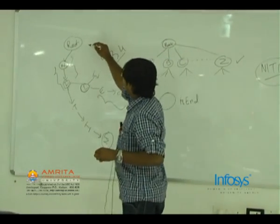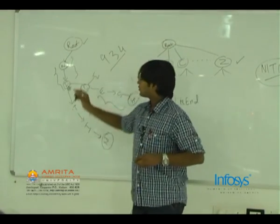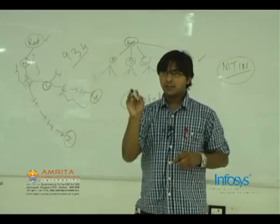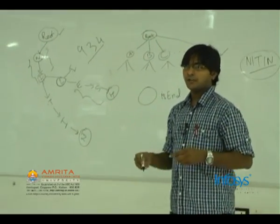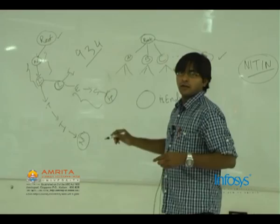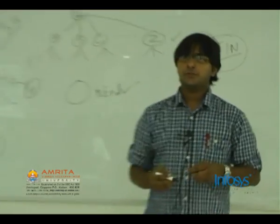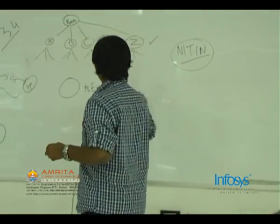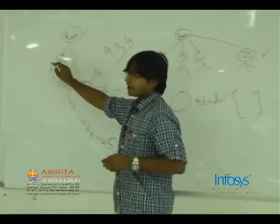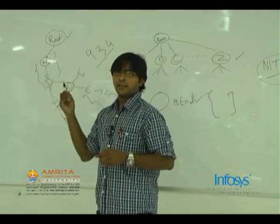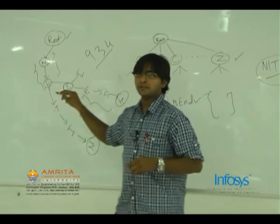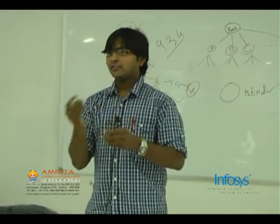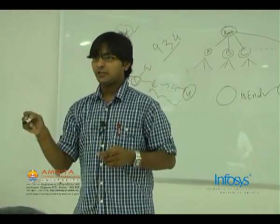Typically, to implement a trie, we maintain a structure with whatever information we need. There can be other miscellaneous information associated with each node. We create that structure and maintain an array of pointers — for an English dictionary there will be 26 pointers in the array.